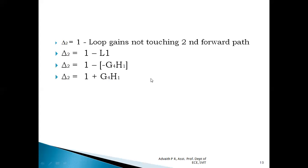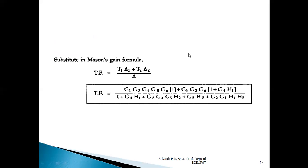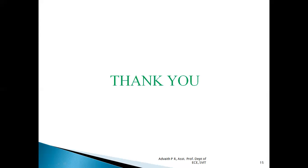Substituting all values into Mason's gain formula: Transfer function = [T1·delta1 + T2·delta2] / delta = [G1·G3·G4·G5·G6·(1) + G1·G2·G6·(1 + G4·H1)] / [1 + G4·H1 + G3·G4·G5·H2 + G2·H2 + G2·G4·H1·H2]. This is how we apply Mason's gain formula to find the transfer function for the given signal flow graph. I hope you have understood this video lecture. Thank you.